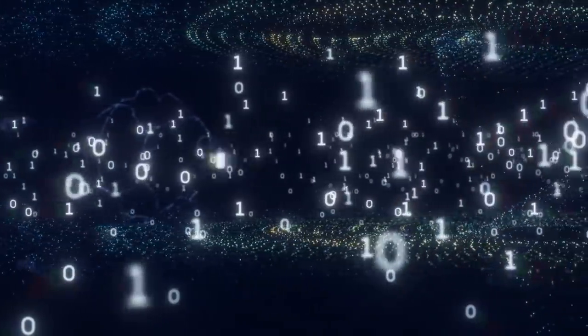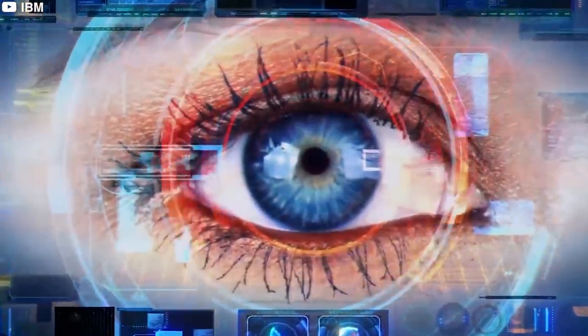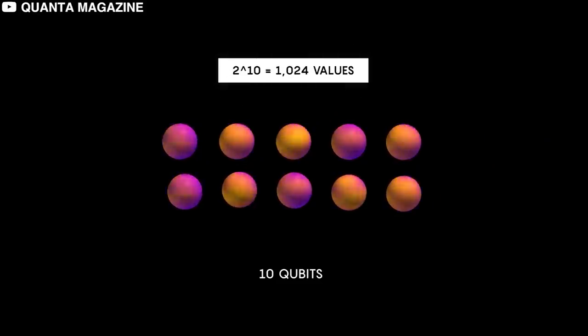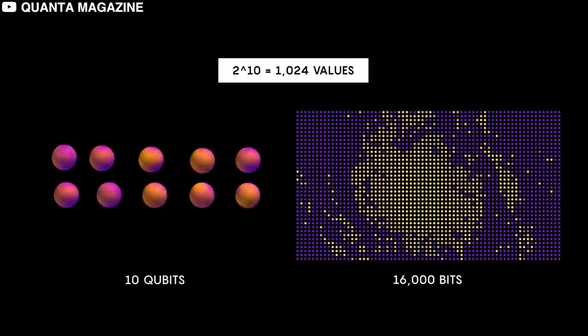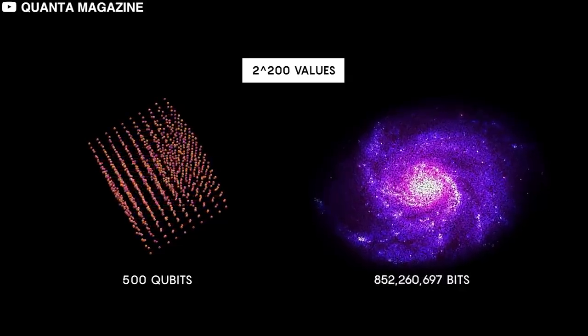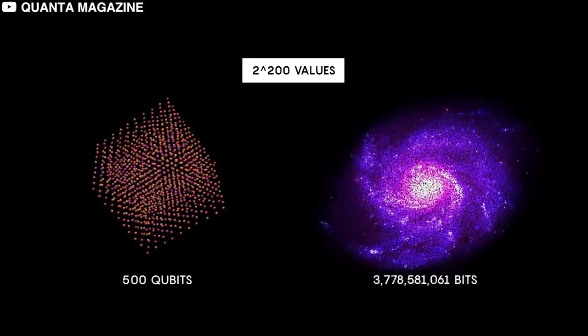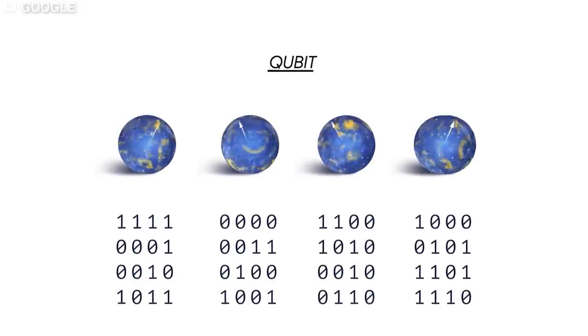And this also means that compared to bits, qubits process a ridiculous amount of information faster. And this ability to process more information faster increases as you increase both the bits of a classical computer and qubits of a quantum computer like Google Sycamore. For instance, unlike two classical bits that will exist in either of the four states, two qubits can exist in all four states at once, three qubits in eight states, four in 16, and so on.